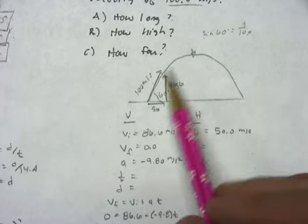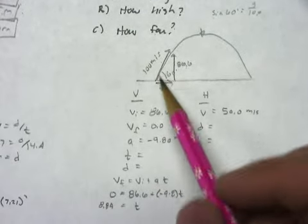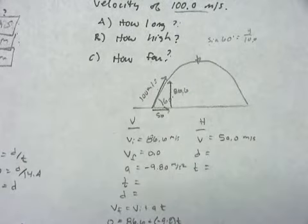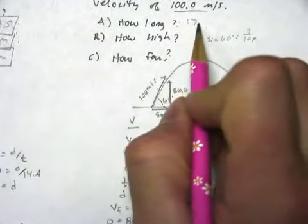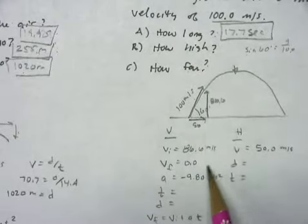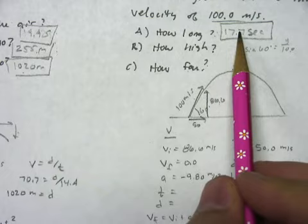Now be careful. It's 8.84 seconds to the very top. How long is it in the air? You've got to double that. And you get 17.7. 17.7 seconds. So, first of all, it should be in the air longer. Good.